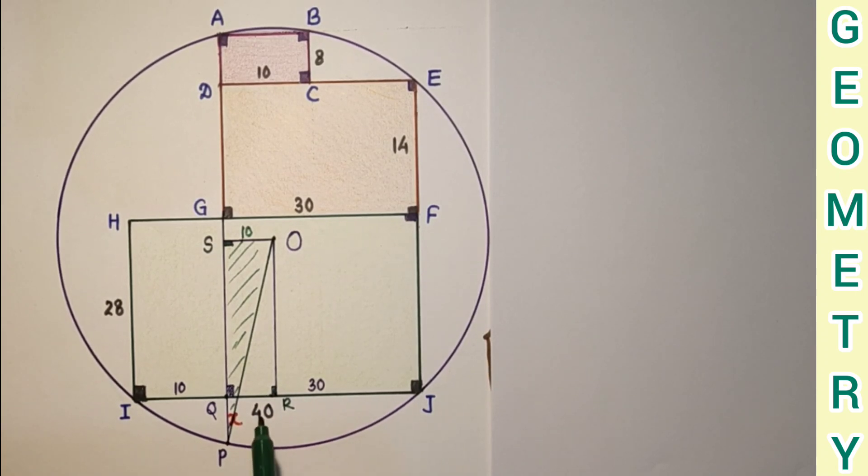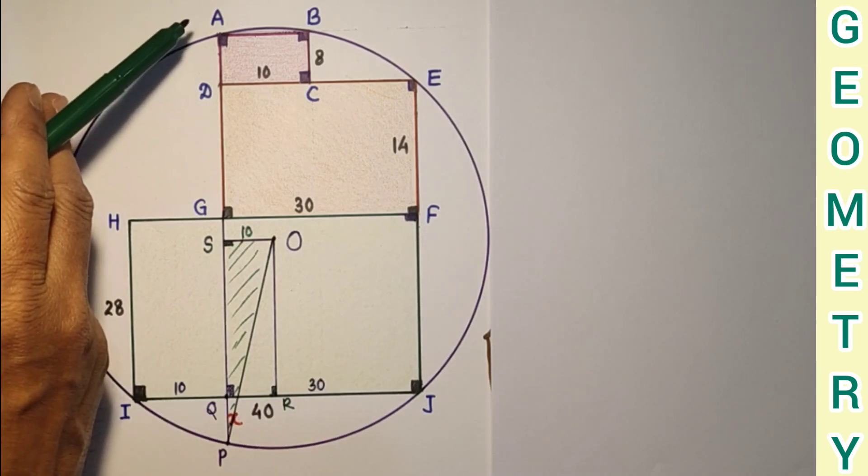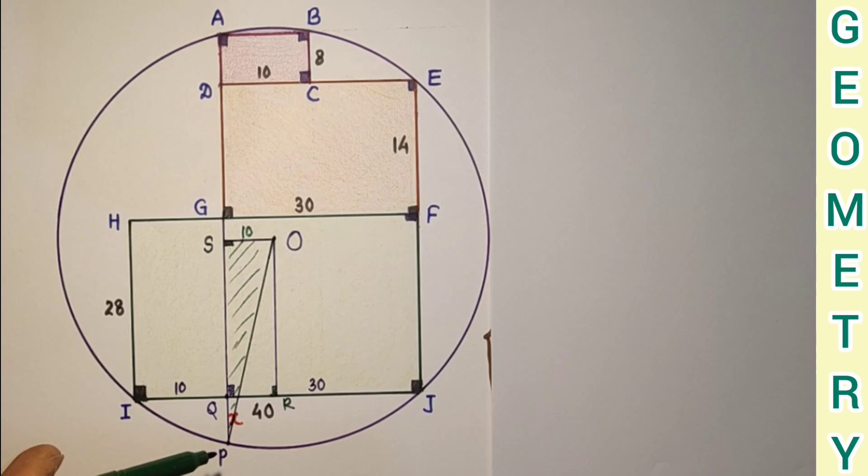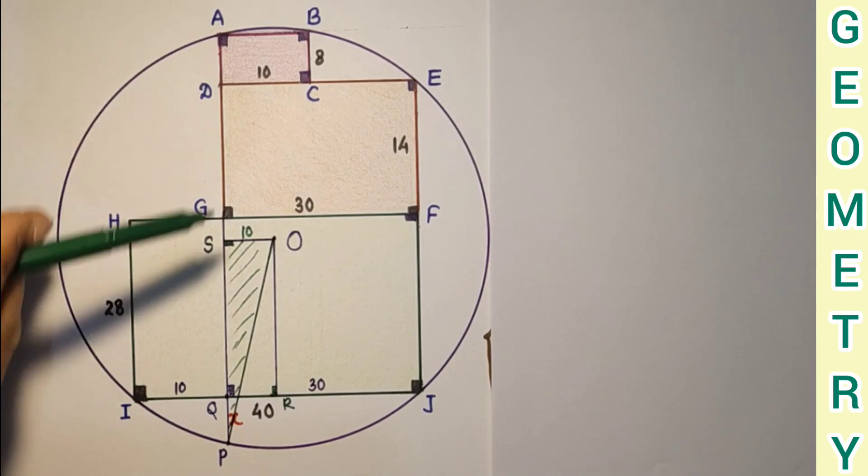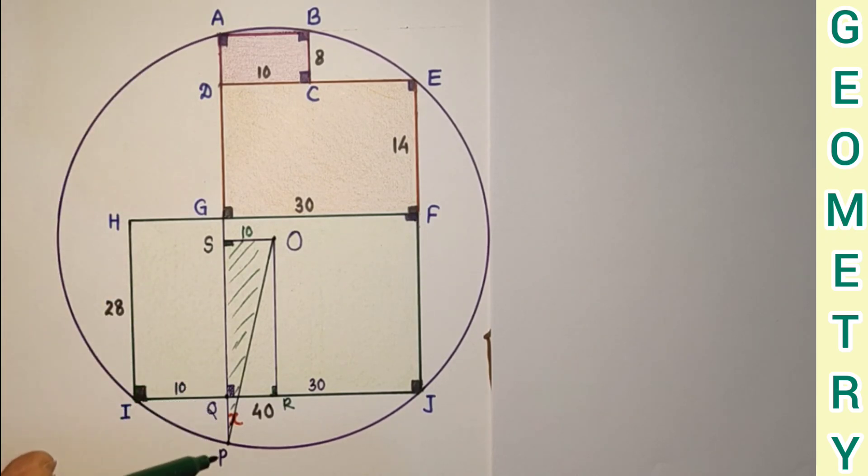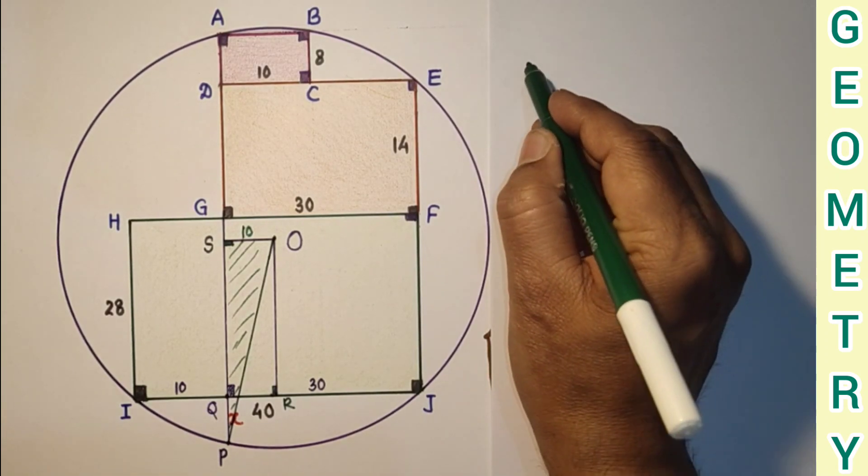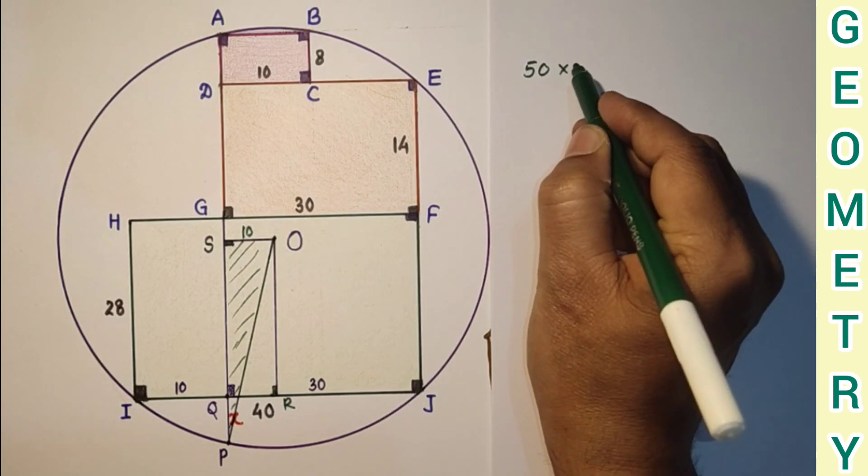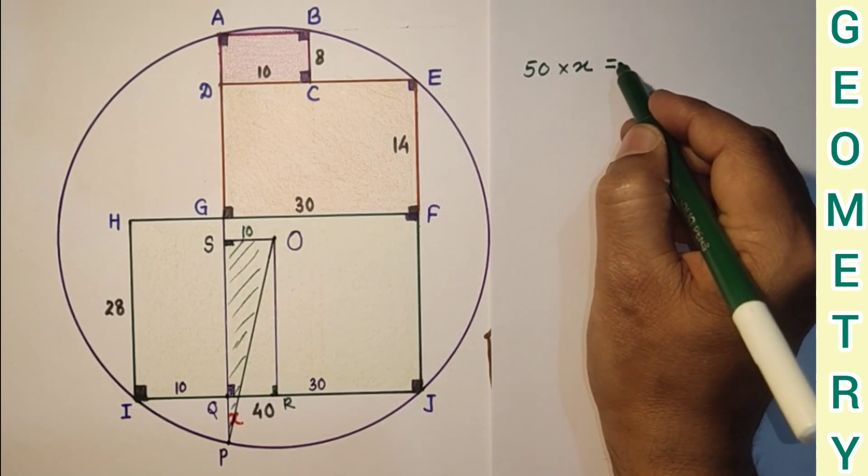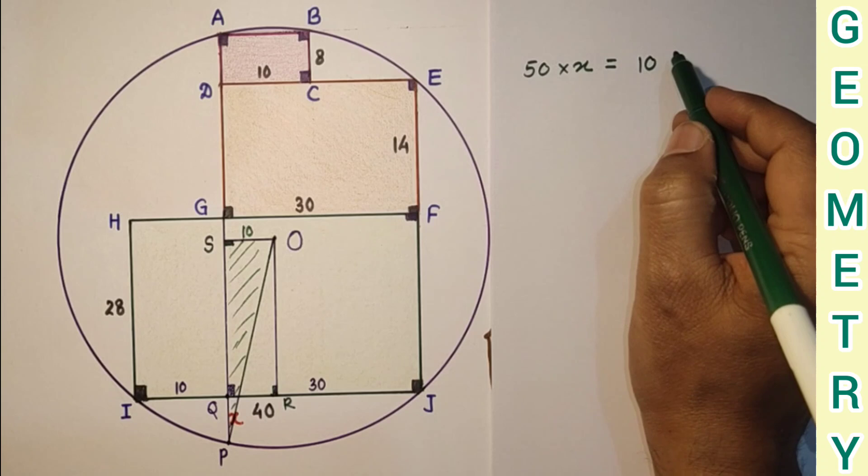First we will find the value of X by rectangular chord property. So this whole thing is 50 plus X, and only this thing AQ is 50. 50 into X is equal to IQ into QJ. So 50 into X is equal to 10 into 30.